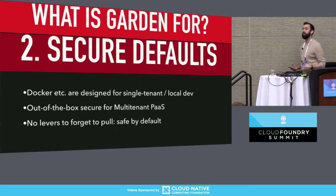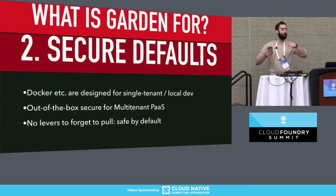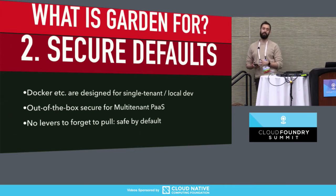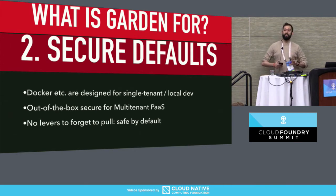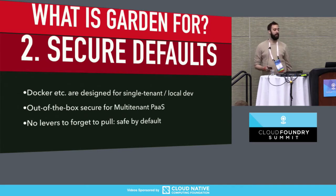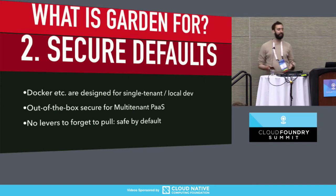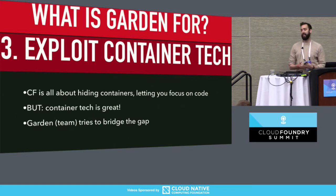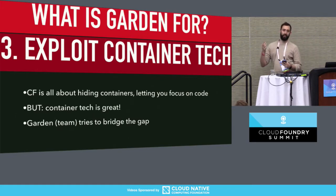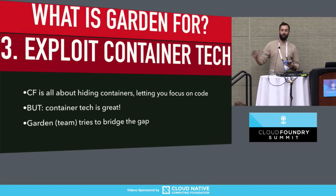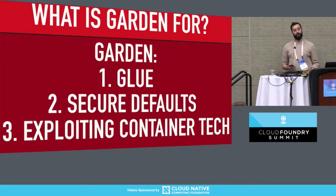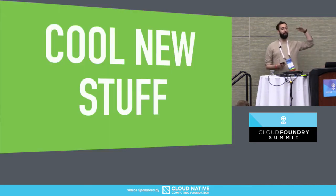The second thing is we make sure there are secure defaults. Unlike upstream technologies, we have to worry about multi-tenant workloads, which are much more difficult and problematic. So we like security to be there out of the box, pre-configured, without options you have to remember to pull to make it secure — it's secure and you can't really disable it. And thirdly, we're about exploiting container technology in the rest of the stack. If we're going to hide it, we want to make sure it actually gets used above what Garden does.